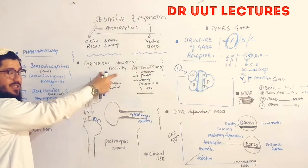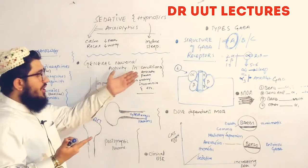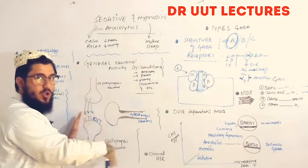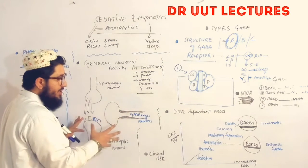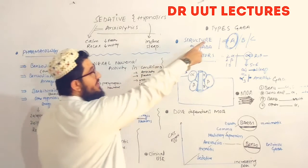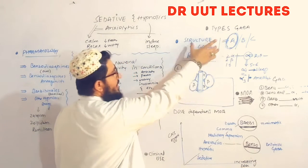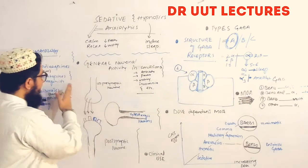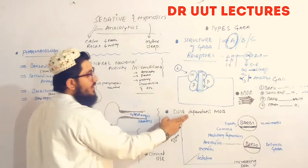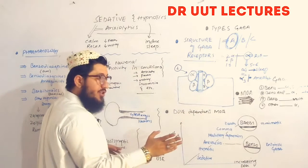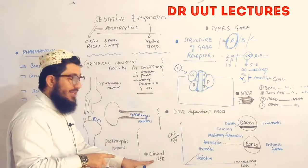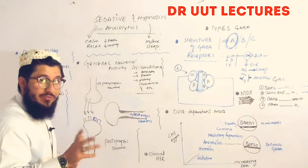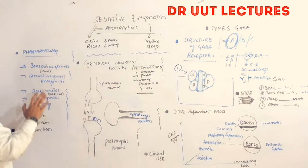Our lecture will cover the pharmacology of sedatives and hypnotics, including general neuronal activity in conditions like fear, anxiety, worry, and insomnia — how our neurons react. From that we will extract the types of GABA receptors, the structure of the GABA receptor, the mechanism of action of the drugs, dose-dependent mechanisms of action, and finally the clinical uses of sedatives and hypnotics.